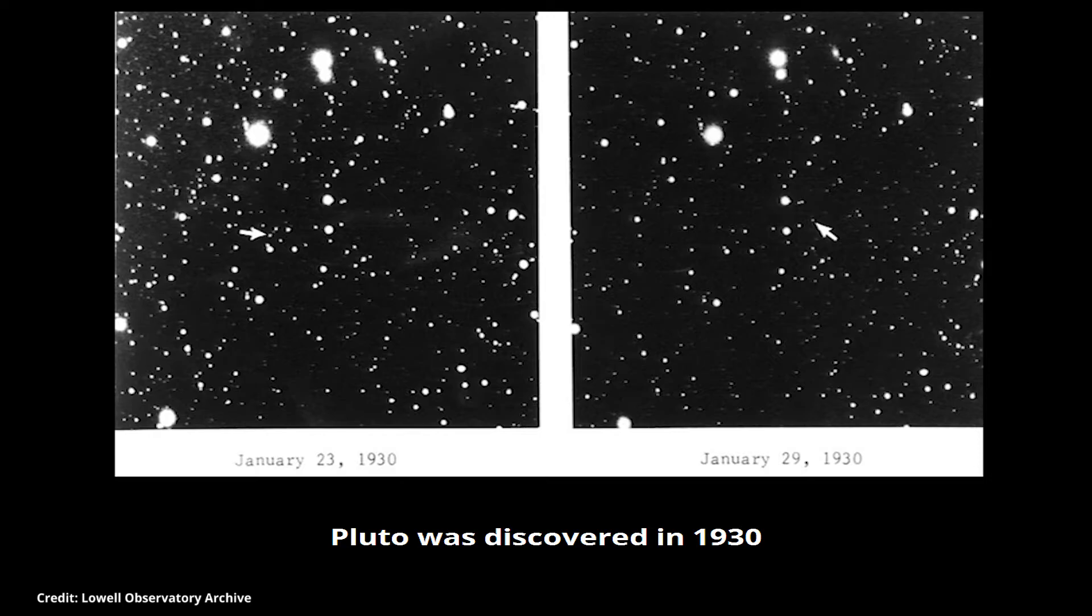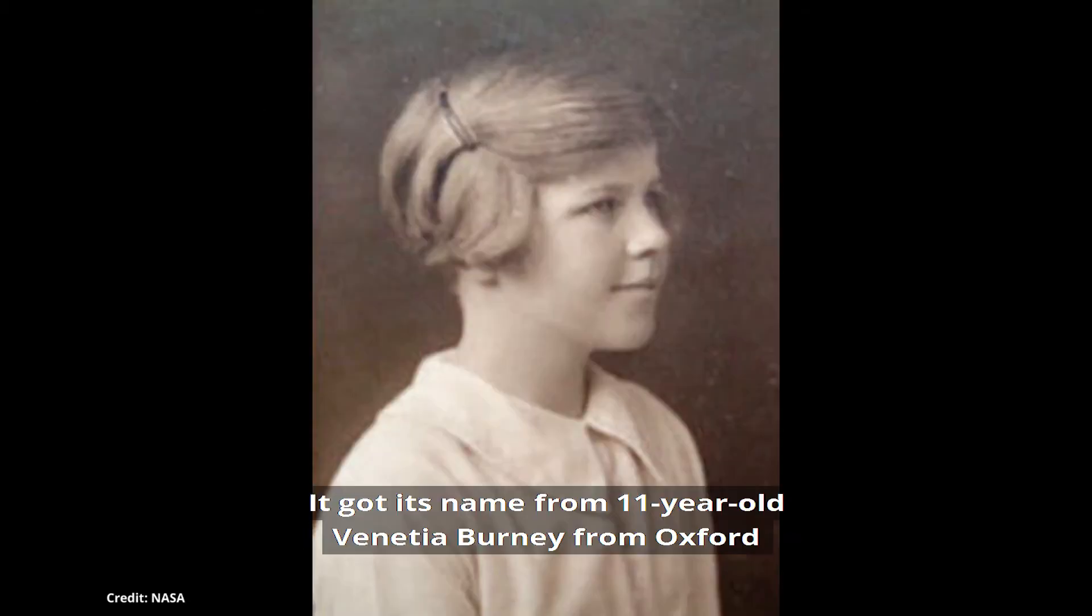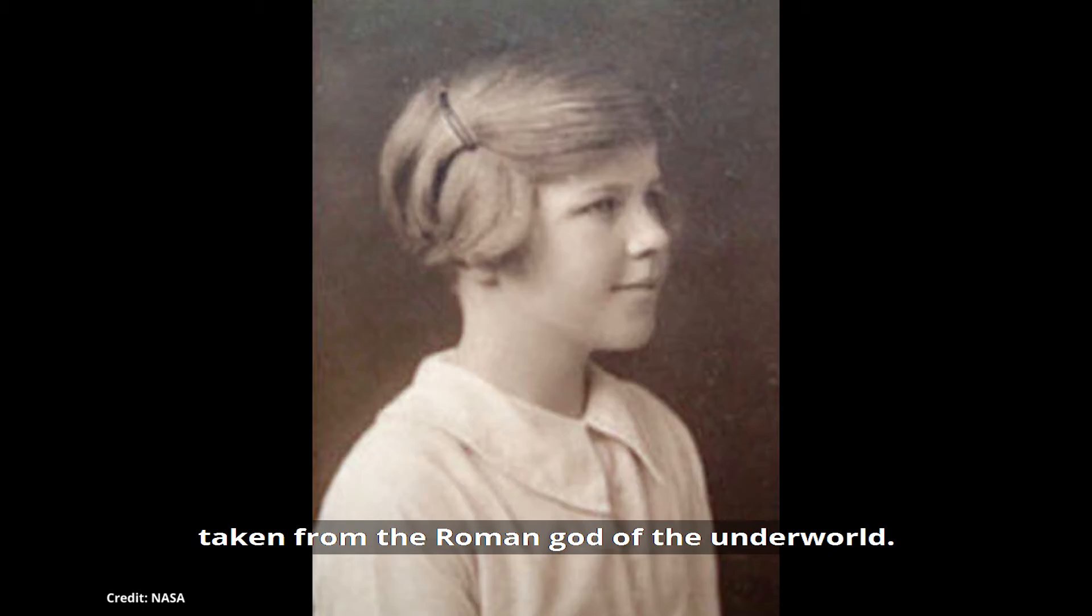Pluto was discovered in 1930 from astronomers' observations that something was interfering with Neptune and Uranus's gravity. It got its name from 11-year-old Venetia Burney from Oxford, taken from the Roman god of the Underworld.